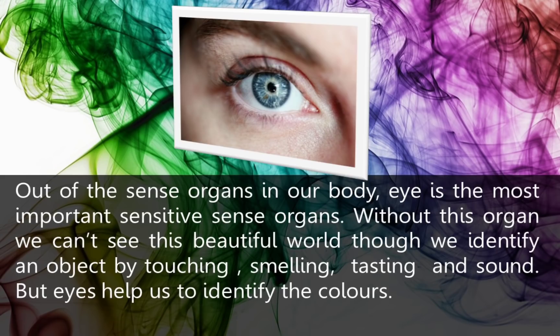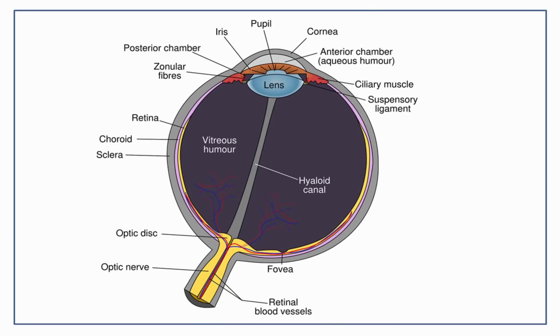We can identify an object by touching, smelling, tasting, and sound, but eyes help us to identify colors. Our eye consists of cornea, iris, pupil, lens, ciliary muscles, retina, optic nerve, and more. These parts coordinate with each other to help us see the colorful world outside.